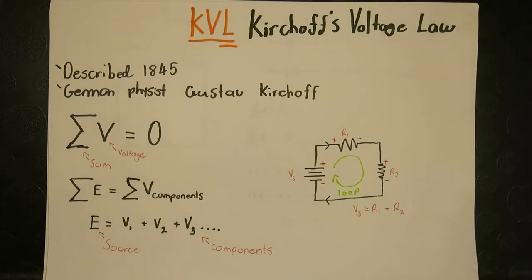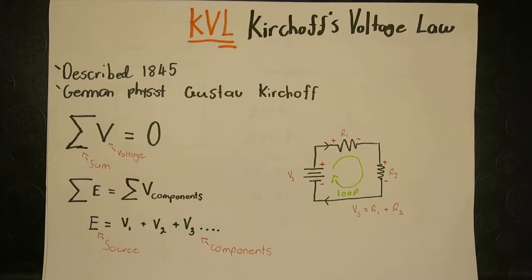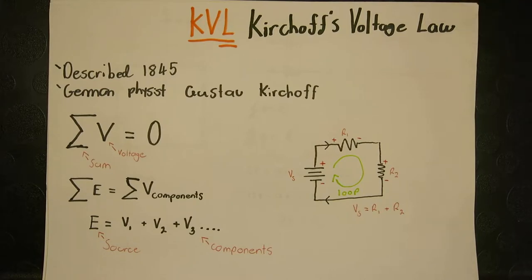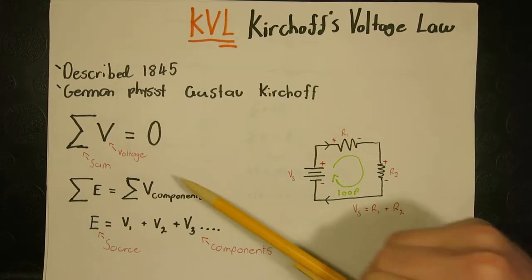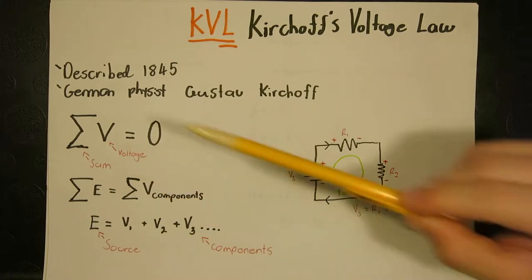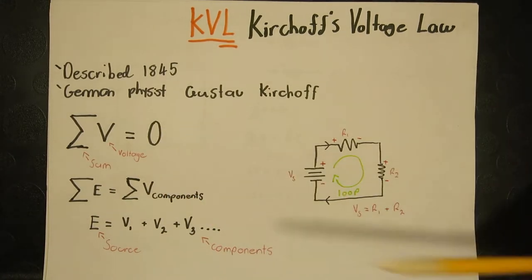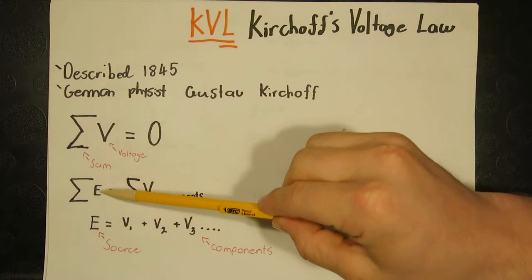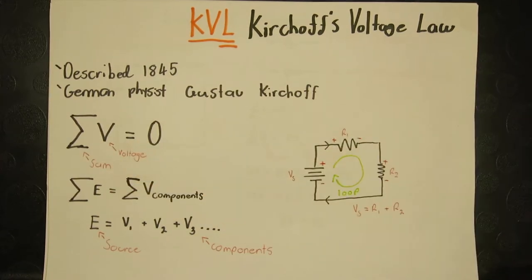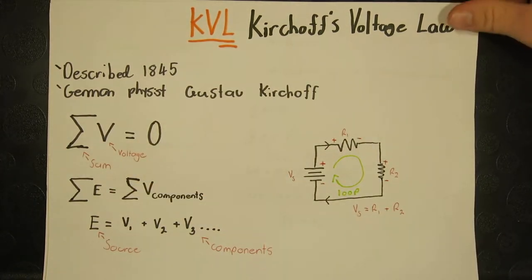On today's video of Dan teaches electrical engineering, we are discussing KVL calculations within AC circuits. KVL describes how the sum of voltages within a closed loop must be equal to zero. That is, the sum of the source's voltage must be equal to the sum of the voltage components, the consumers of the voltage.